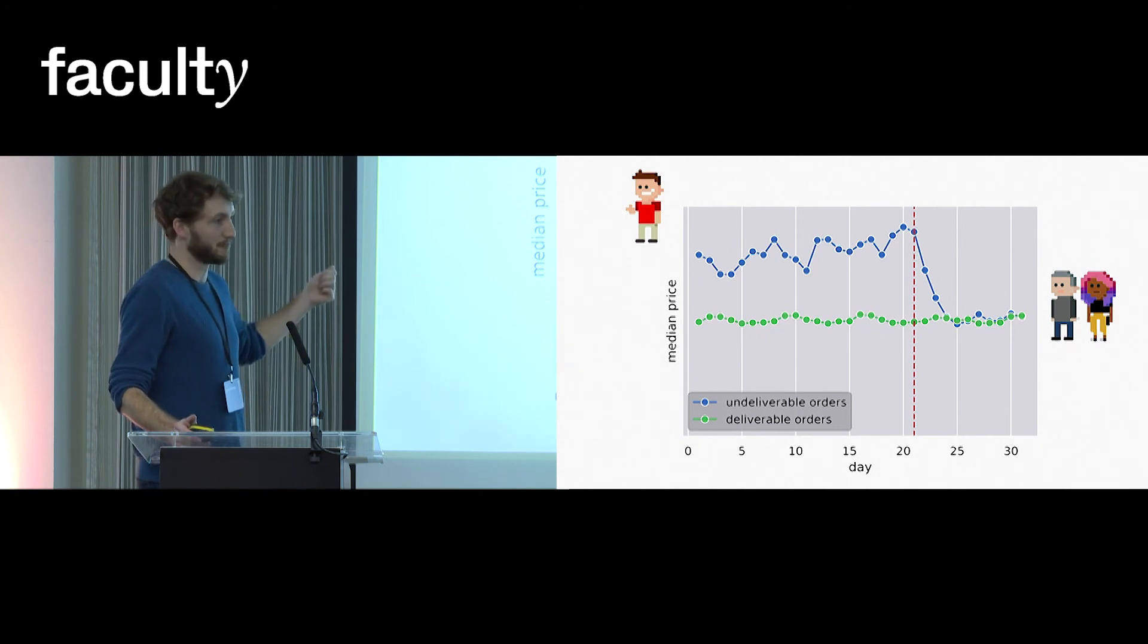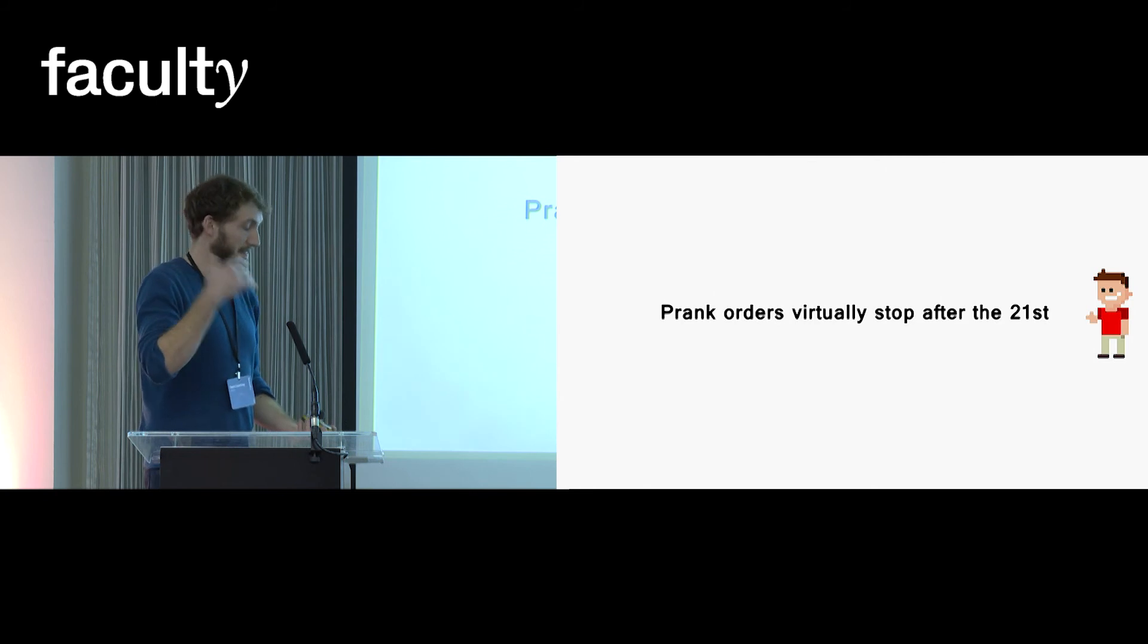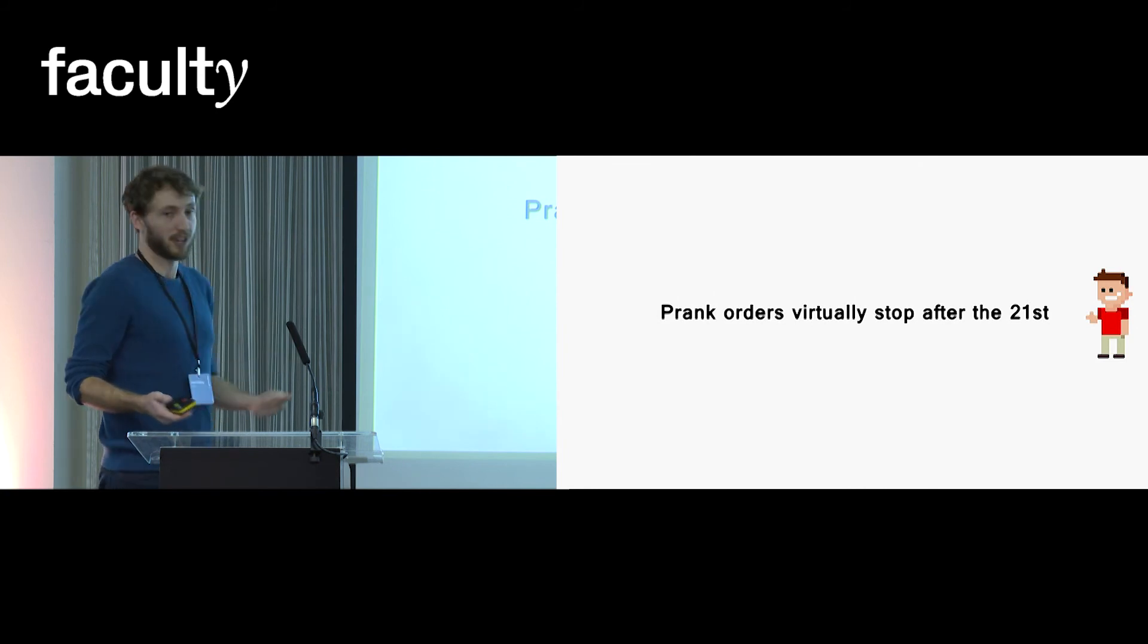Now, this is just one graph. This is not definitive proof. If I had more time, I could show you ten more graphs that show similar things, that after the 21st, the fingerprints of the prank orders drop out of our data and it seems like prank orders just stopped after the 21st.